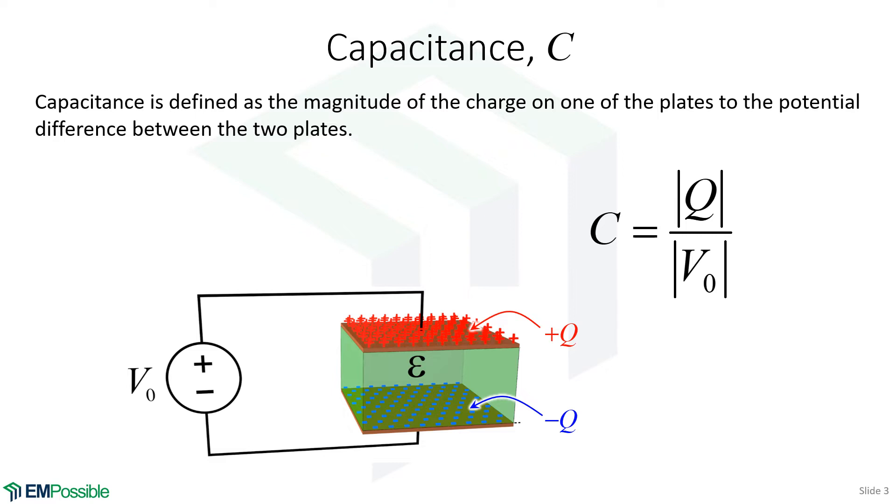The capacitance is really a measure of how much electric energy a device can store for a given applied voltage. The higher the capacitance, even though we apply the same voltage, it accumulates more charge. So it makes sense then that we'll define capacitance as the charge divided by the applied voltage. Notice I have the absolute value outside charge and applied voltage, and that's because the signs don't matter for capacitance.